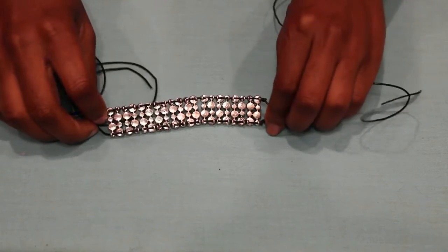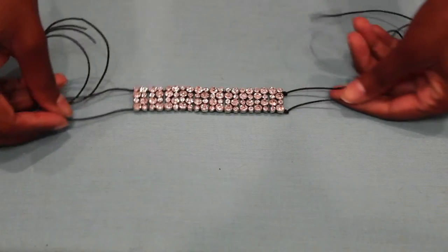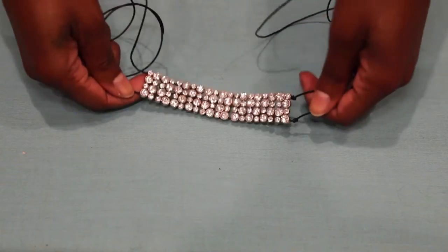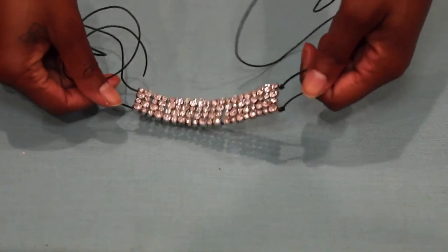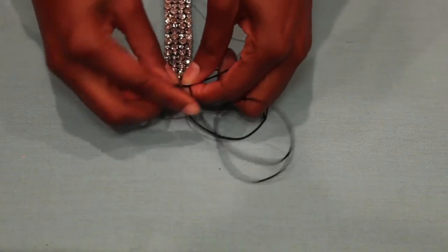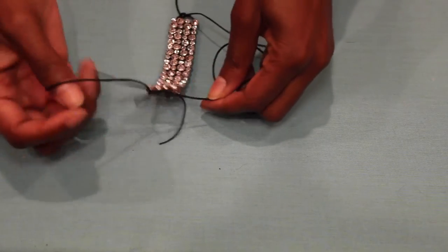Once you are done threading that, you can go ahead and tie another knot. This is just going to help ensure that your beads stay in the middle of the cording. This is what it looks like. Isn't it so pretty?